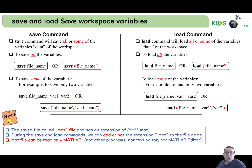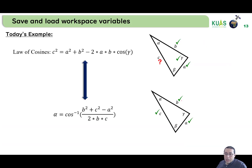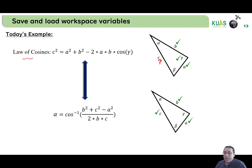Let's check how to use the save and load commands. For today's example, we use the same example explained in detail during the video on variable assignment — please review that video if you need more details. We use the law of cosines: if we know sides a and b and angle gamma, we can estimate side c.